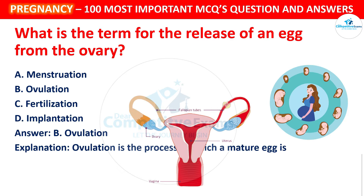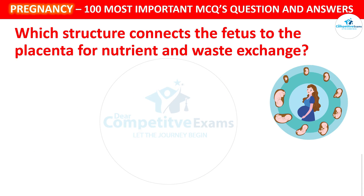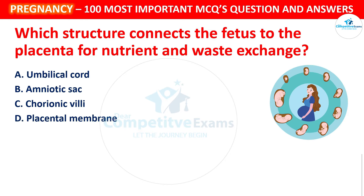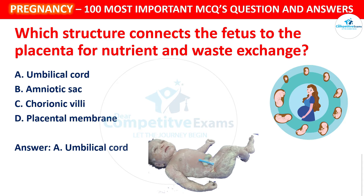Next question: Which structure connects the fetus to the placenta for nutrient and waste exchange? Your options: Umbilical cord, Amniotic sac, Chorionic villi, or Placental membranes. The correct answer is Umbilical cord. The umbilical cord connects the fetus to the placenta, allowing exchange of nutrients and elimination of waste products.